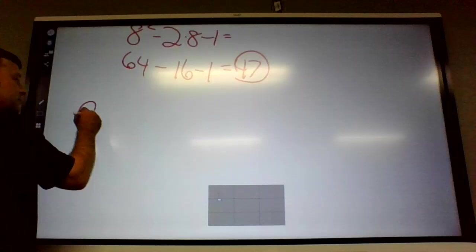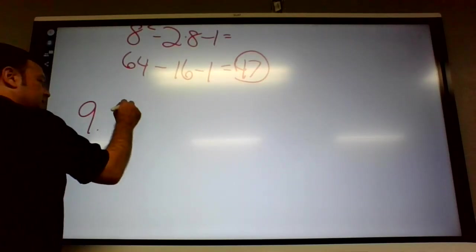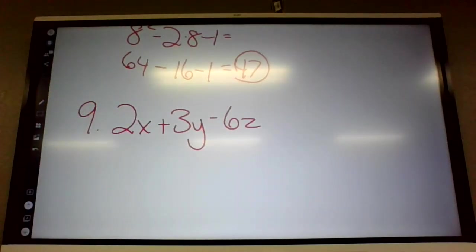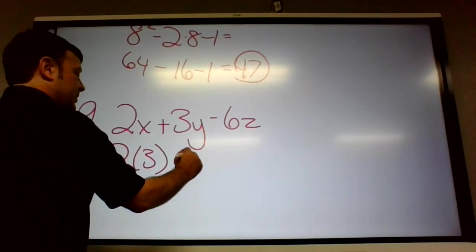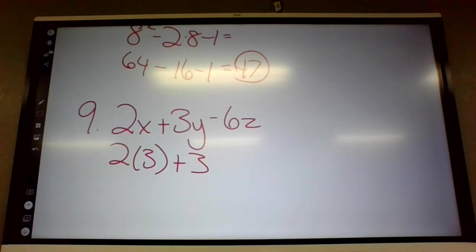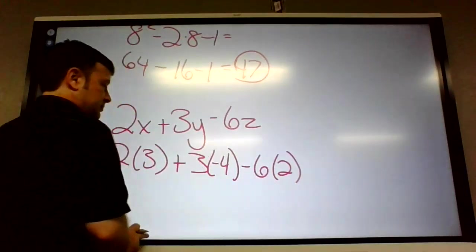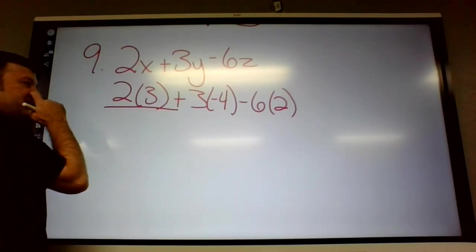All right, now number nine. Okay, it's more plugging stuff in. Evaluate x equals 3, y equals negative 4, and z equals 2. 2x plus 3y minus 6z. Okay, so on this one, we have three different numbers to plug in. And x is 3. You could just hit times 3. I'm going to put parentheses because it makes it look neater. Y is negative 4. And z is 2, I think.